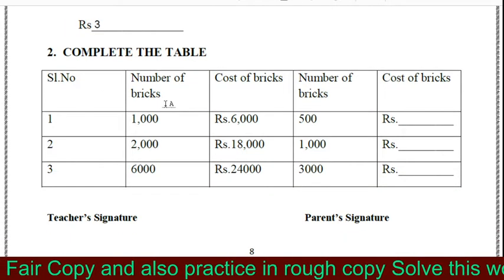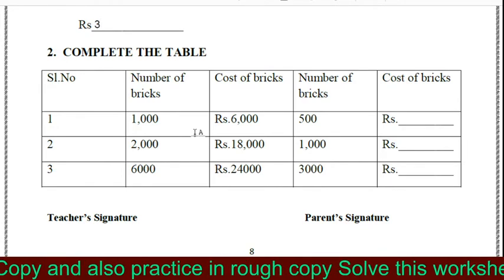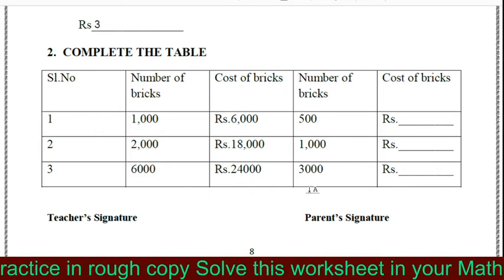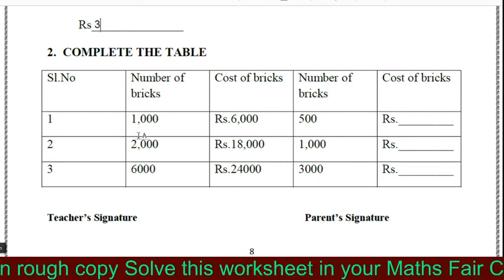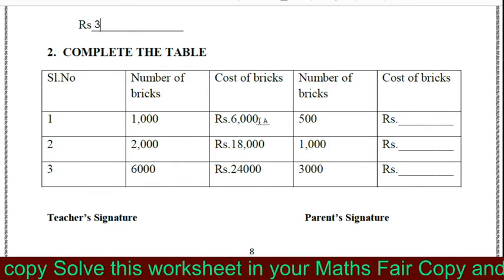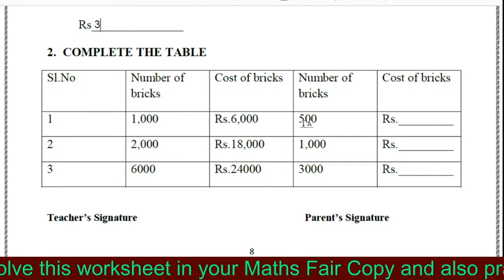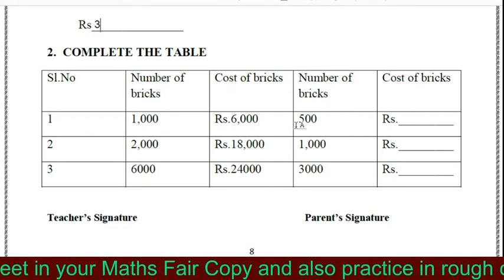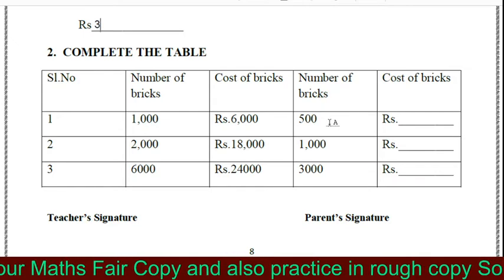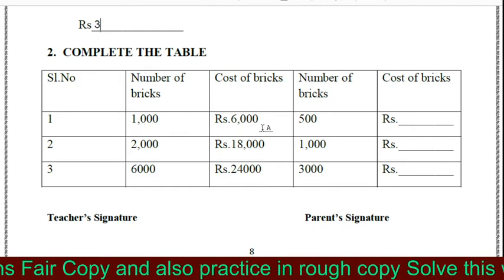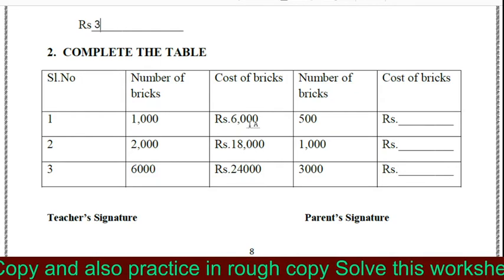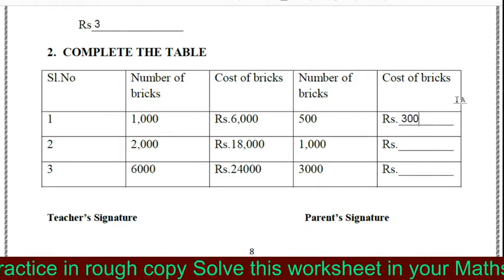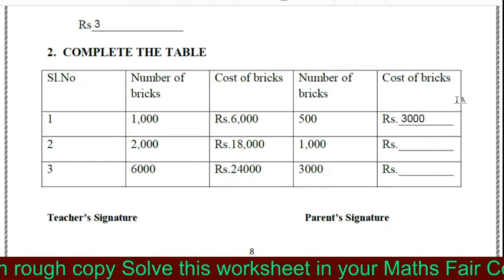Now we have to complete the table. The number of bricks and their costs are given, and we find the missing costs. First, 1,000 bricks cost rupees 6,000 — find the cost of 500 bricks. Since 500 is half of 1,000, we take half of 6,000, which is 3,000. So the cost of 500 bricks is rupees 3,000.